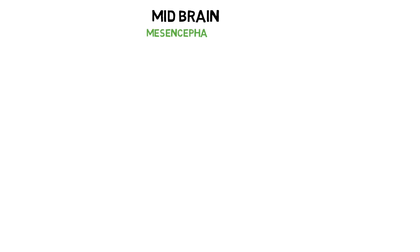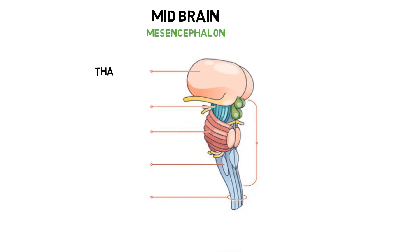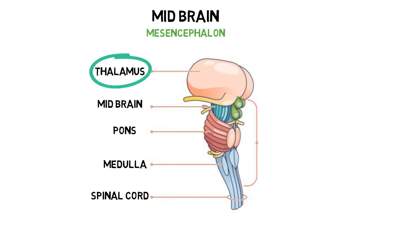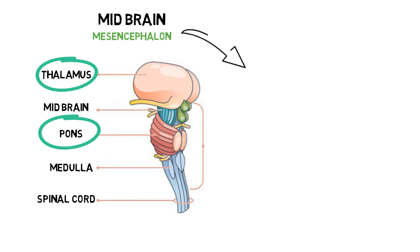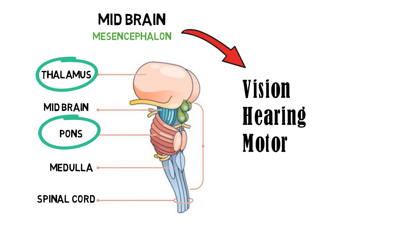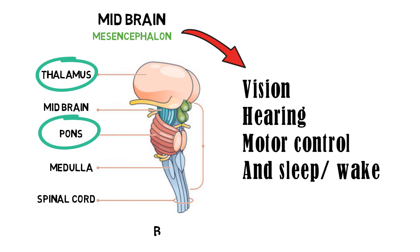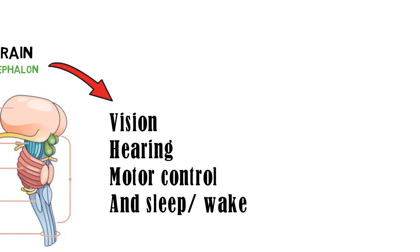The midbrain, also called mesencephalon, is located between the thalamus and hypothalamus of the forebrain and the parts of the hindbrain. The midbrain is associated with vision, hearing, motor control and the sleep-wake cycle. The midbrain is considered as part of the brain stem.